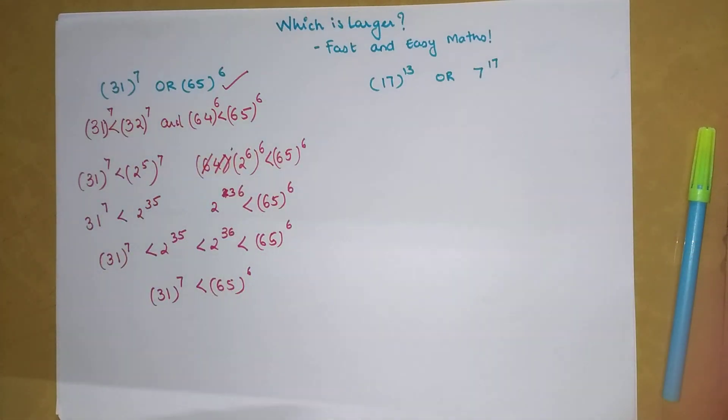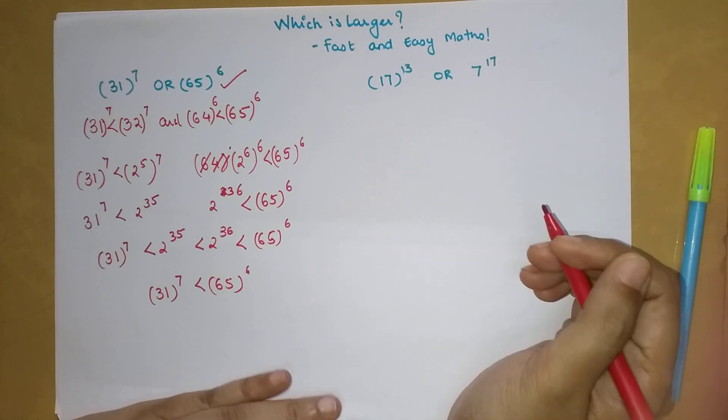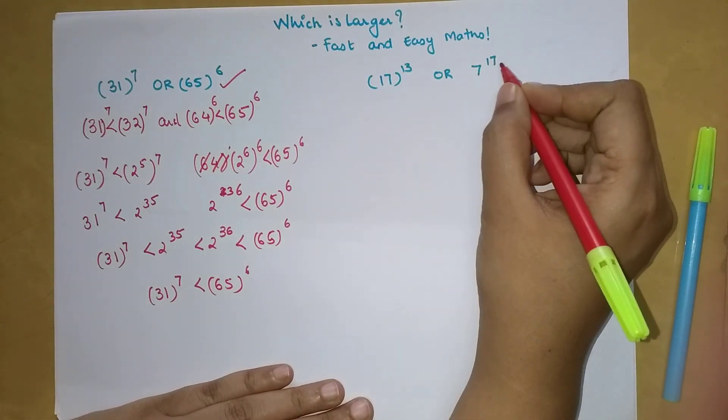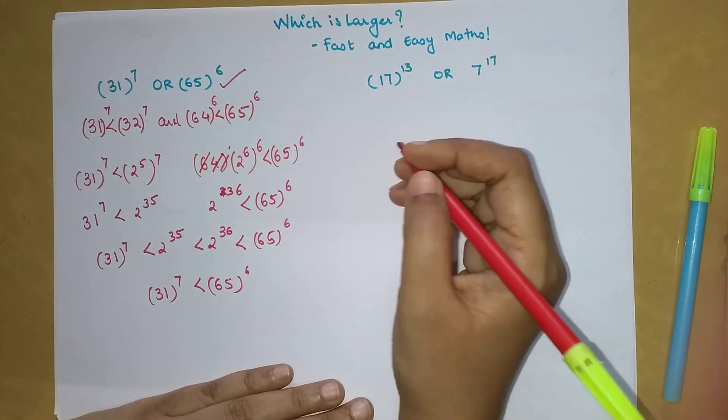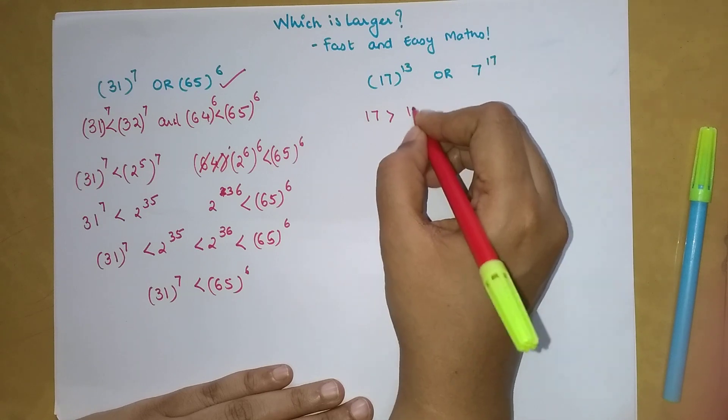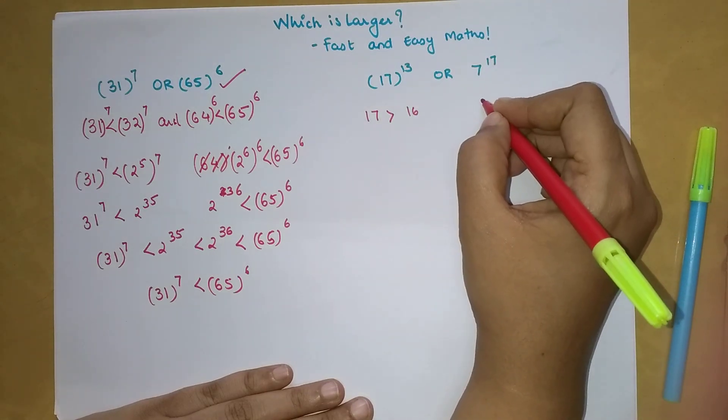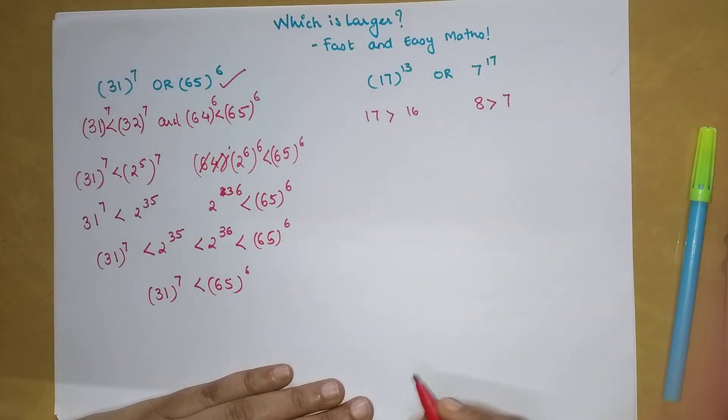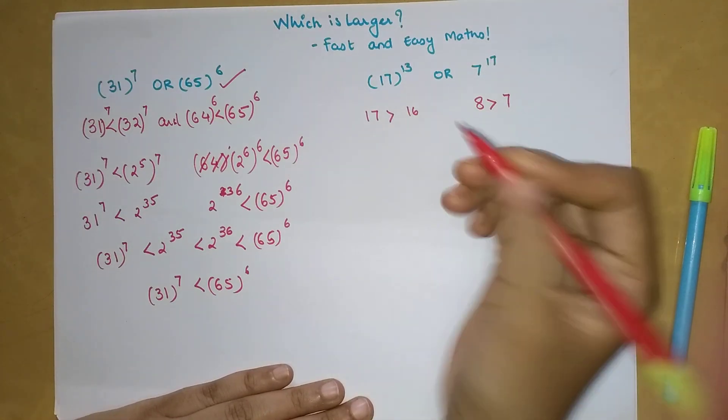Now we have 17 raised to 13 and 7 raised to 17. I can write 17 which is greater than 16, and I can write 8 which is greater than 7. Why have I taken 16 and 8? Because they are powers of 2.